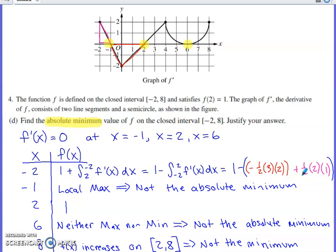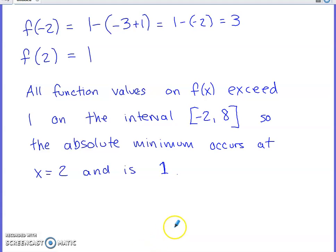Now, you do need to have the ability to do a direct comparison between any of these candidates. Now, three of them are already ruled out, but we need to know what the value of this is, compare it to 1. The smaller of those two is going to be our absolute minimum. So I was out of room on this screen, so I just went to a new screen, simplified that calculation that we saw on the prior screen a little bit. I realized I got a value of 3 for the function at negative 2. Clearly, 1 is smaller than 3, so all function values of f of x exceed 1 on the interval negative 2 to 8. So our absolute minimum occurs at the x value of 2 and is 1.